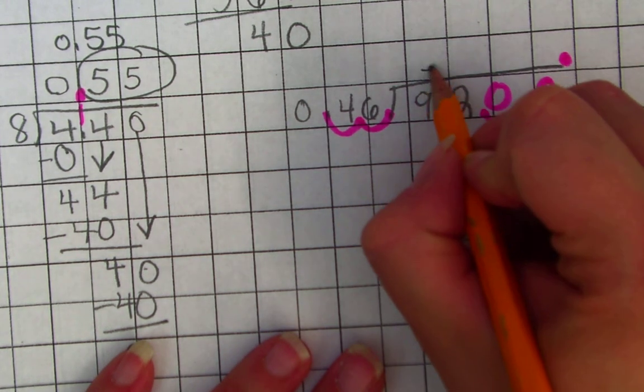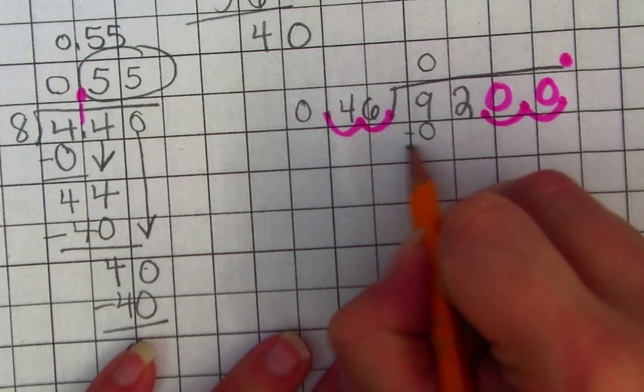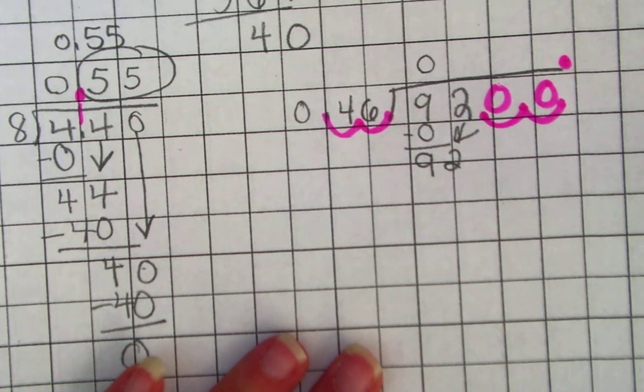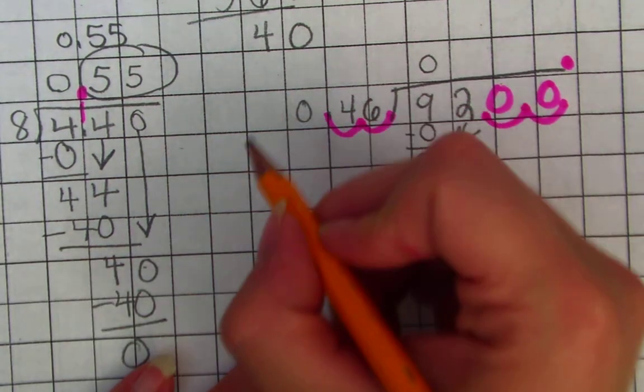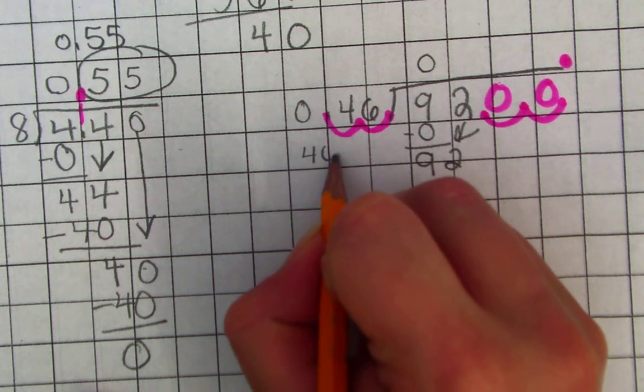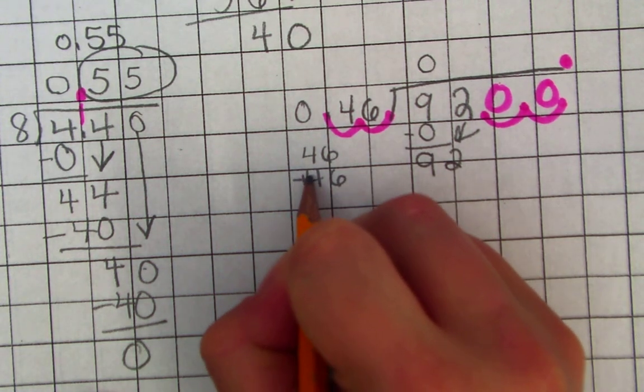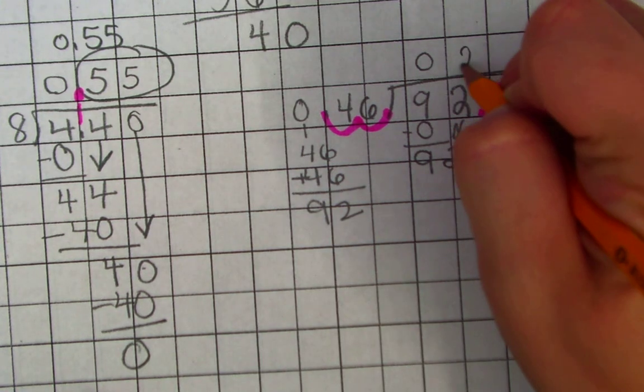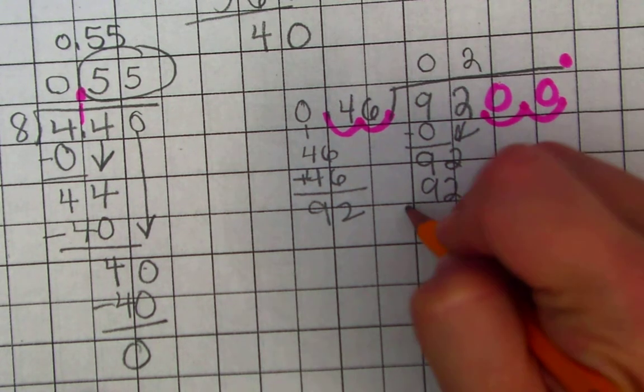So let's look at 46 going into 9. 0 times. Bring down your 2. I can't do 46 into 92. I think it's twice, but I'm going to check. 46 plus 46 gets you 12. Trade through 1 gets you 92. So it goes in 2 times. 92. 0.